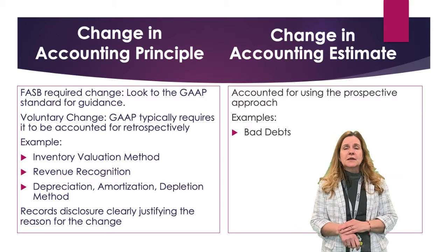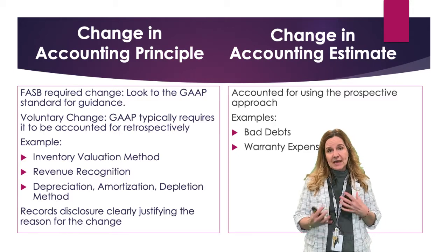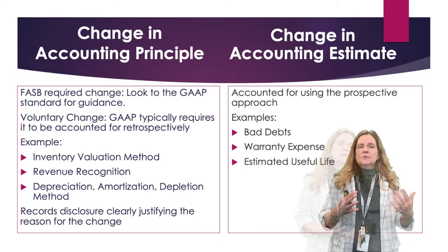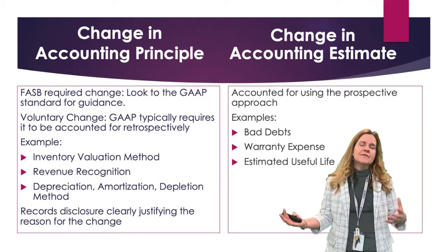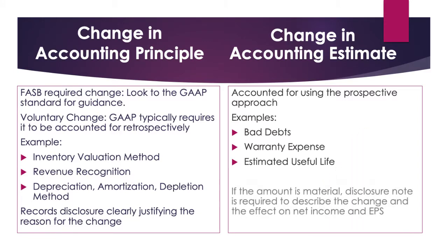If I change my estimate there, I would use the prospective approach. Warranty expense — when I'm estimating my warranties in dollars, how much items are going to be returned that we have to repair and how much that's going to cost — we have to estimate that because we don't know. Useful lives on our plant assets — for example, we may think a building has a 15-year life and then adjust that. When these changes are material, meaning they may cause the user to make a different decision, it has to be disclosed in the notes, describing the change and its effect on net income and earnings per share.